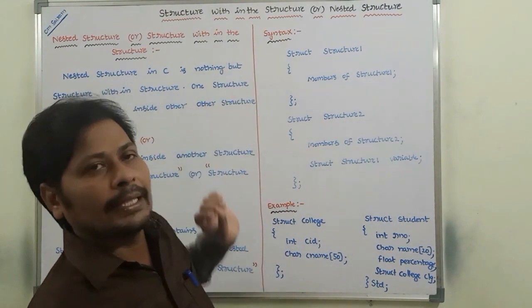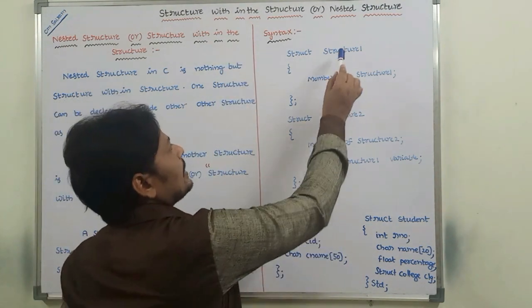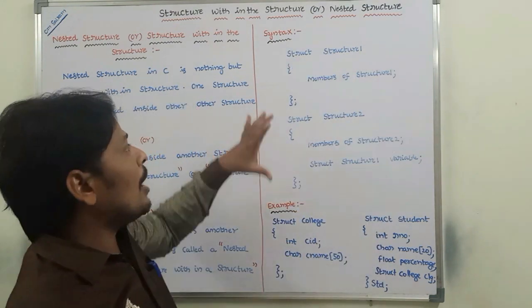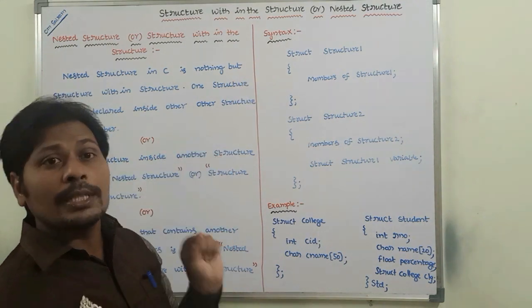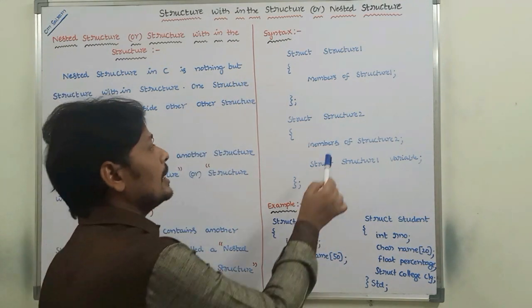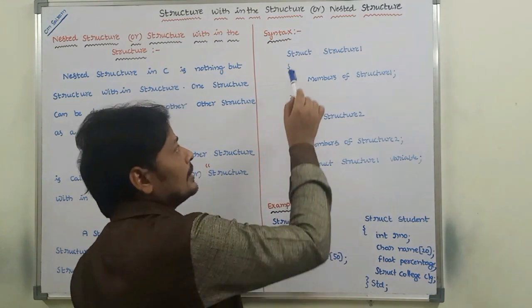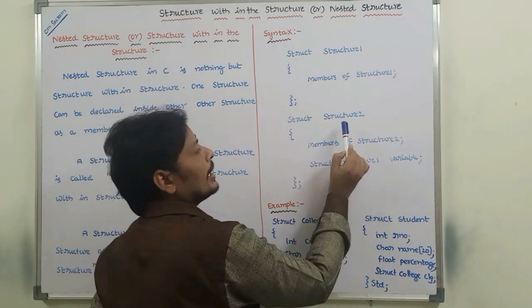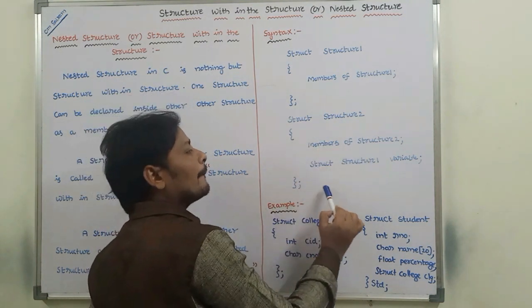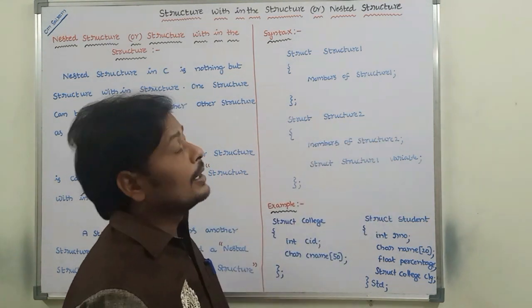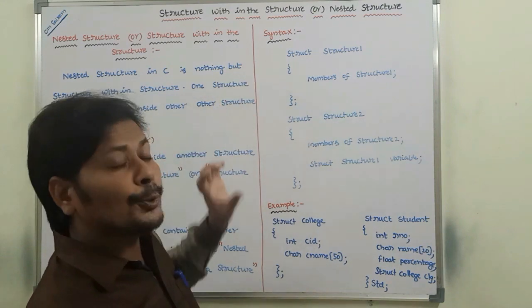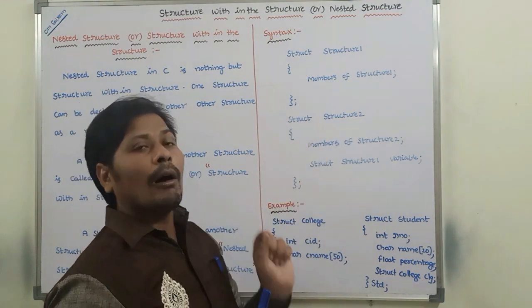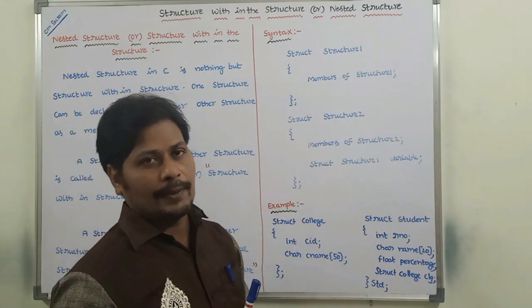Now this is the syntax. This is the first structure and this is the second structure. Amongst the two structures, the second structure is the main structure, because the first structure can be declared as a data member inside it. Here, structure 1 and structure 2 are the two structures.